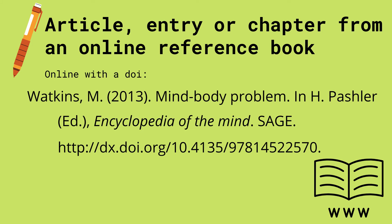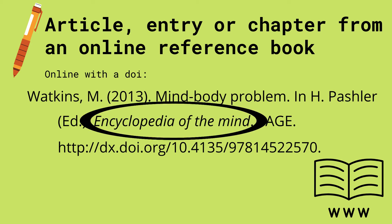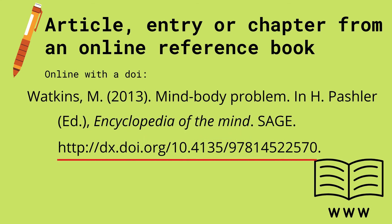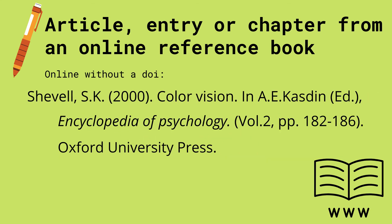For an article entry or chapter from an online reference book with DOI, begin with the author's name and publishing year, the title of the article, the contributor or editor's name, the online reference book, the publisher's name, and then lastly the DOI. For an article entry or chapter from an online reference book without a DOI, the format is similar. If you can also indicate the volume and pages where the article came from, it would be better.